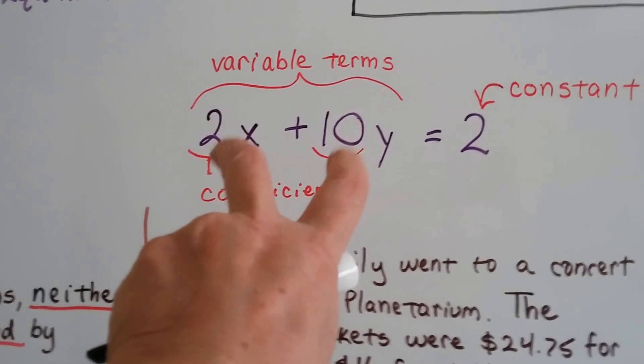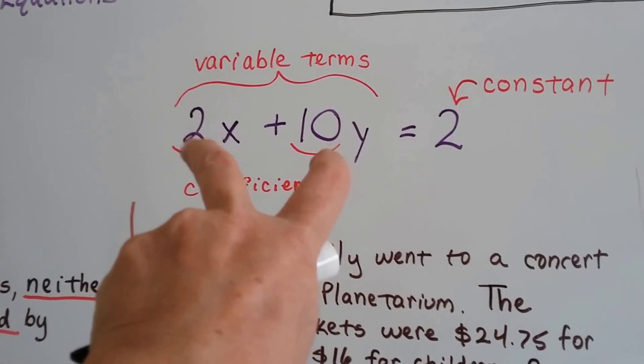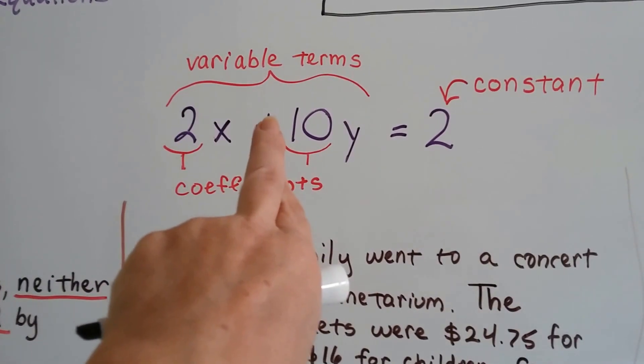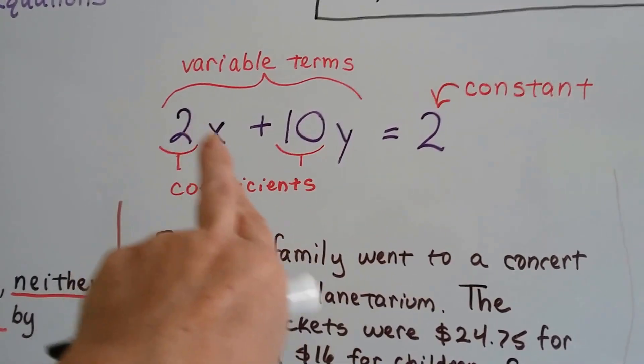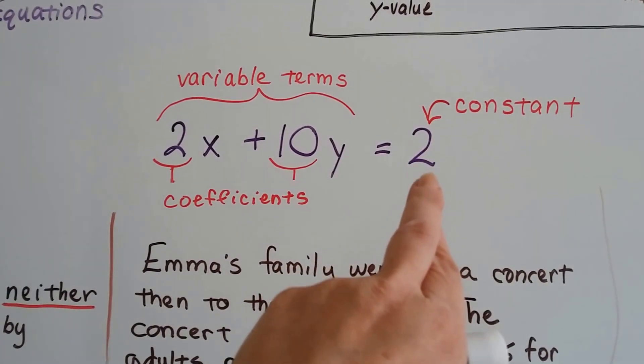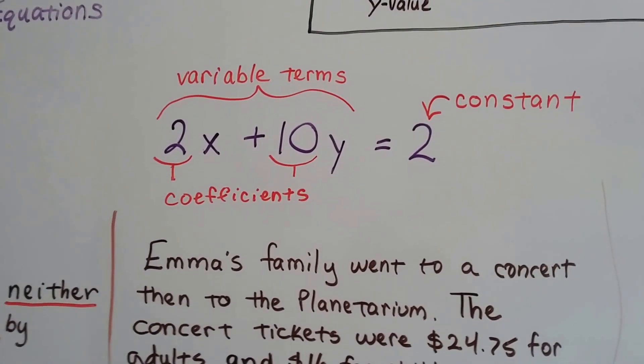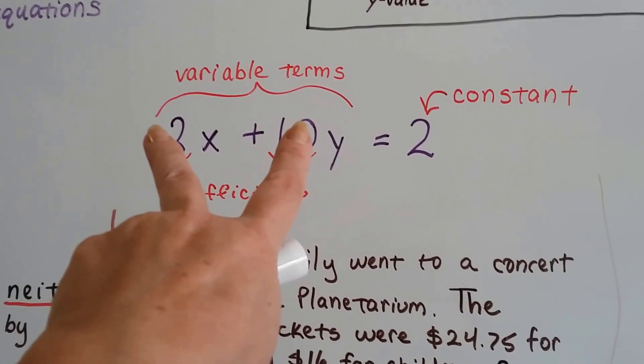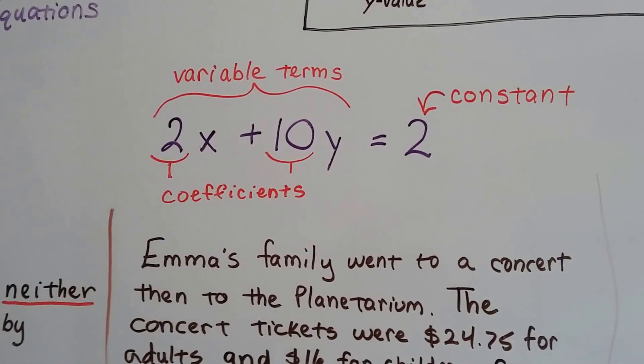As we said before, these are variable terms because they have variables in them. They're separated by an operation sign. We have a constant term that doesn't have a variable, so that number is not going to change. And the coefficients are the numbers that are in front of the variables.